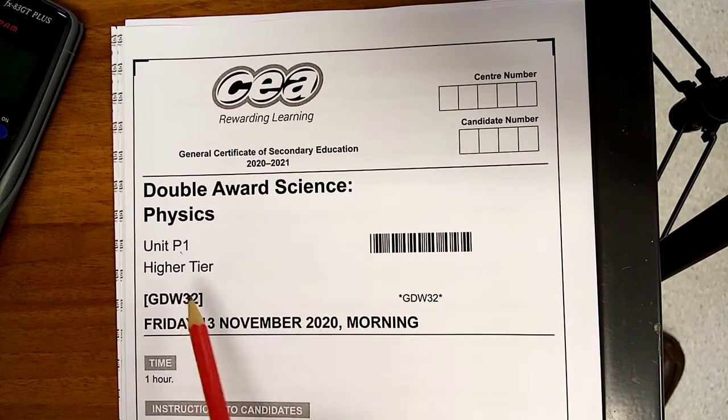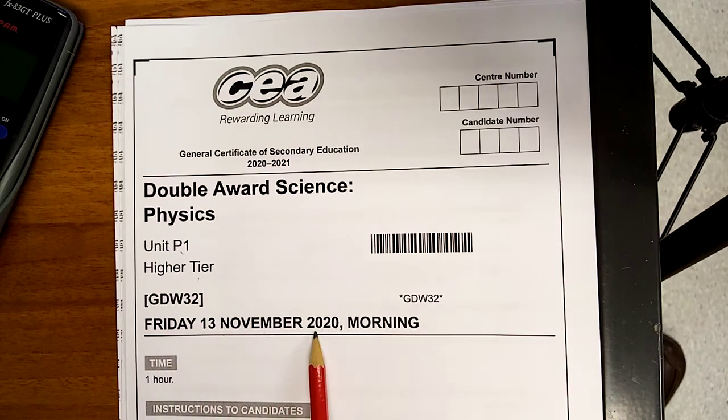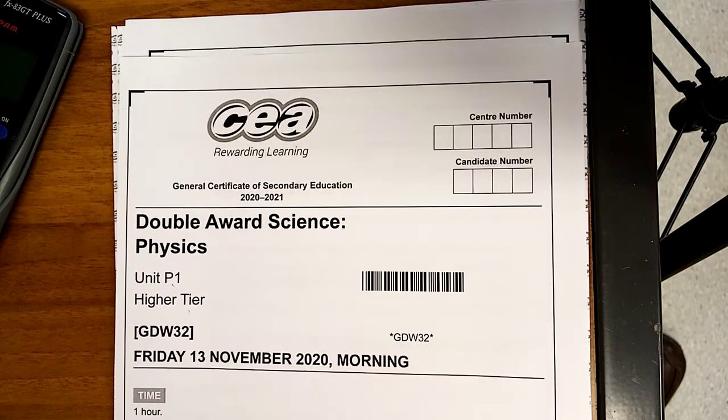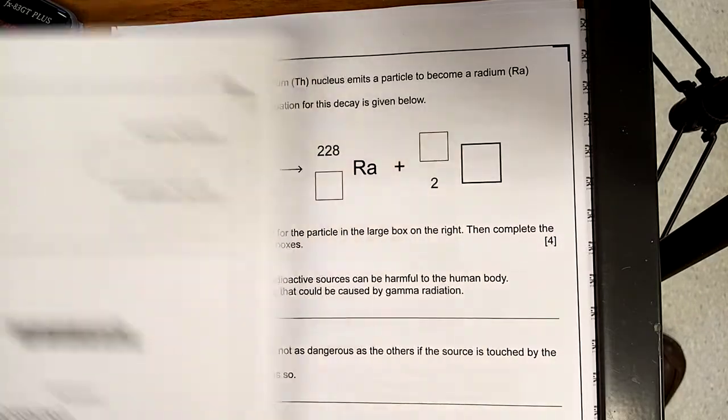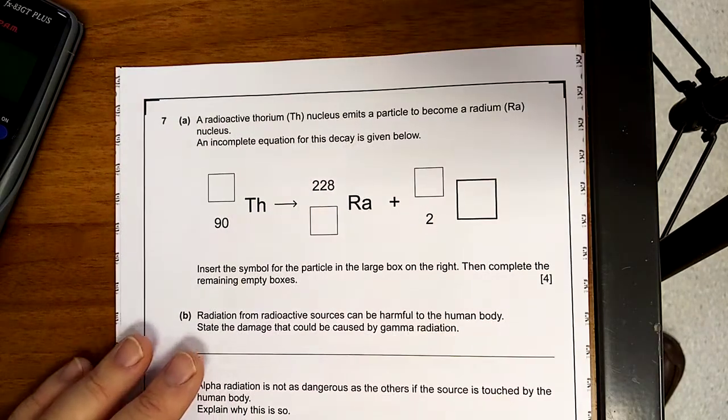Welcome back, we're doing P1, it's the higher tier, Friday the 13th of November, it's the year 11 paper. I'm going to do 7, 8 and 9 this time, there's only 3 left. So, we'll kick off here.